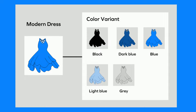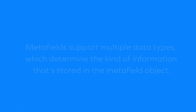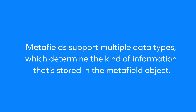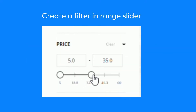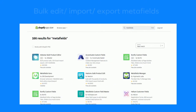A description is an optional field for you to better describe your meta field. Meta fields make it possible to store additional information for both products and variants, and they support multiple data types which determine the kind of information stored in the meta field object. If you want to create a filter and range slider, we recommend adding meta fields to products or variants.